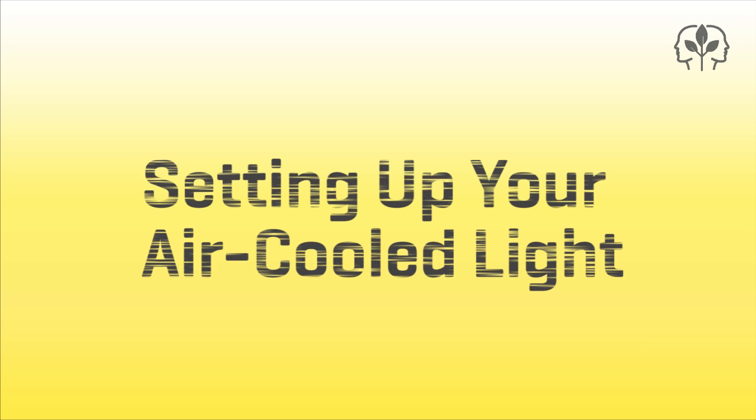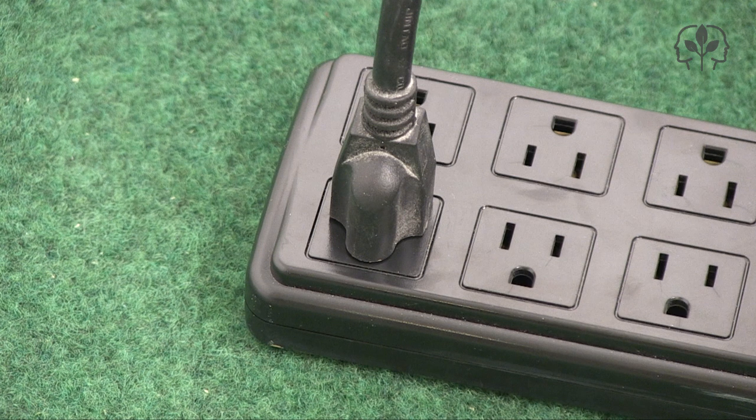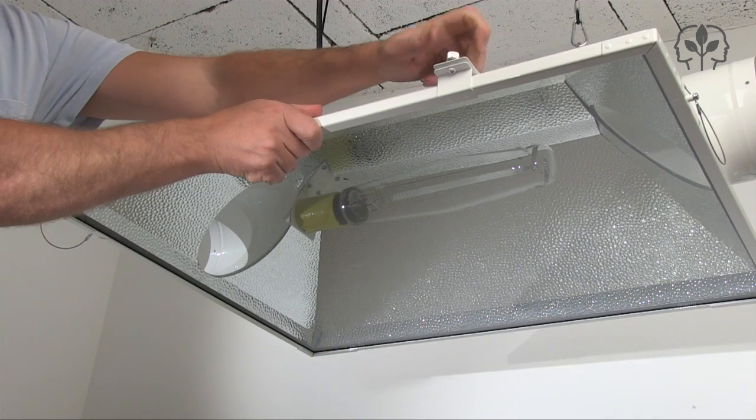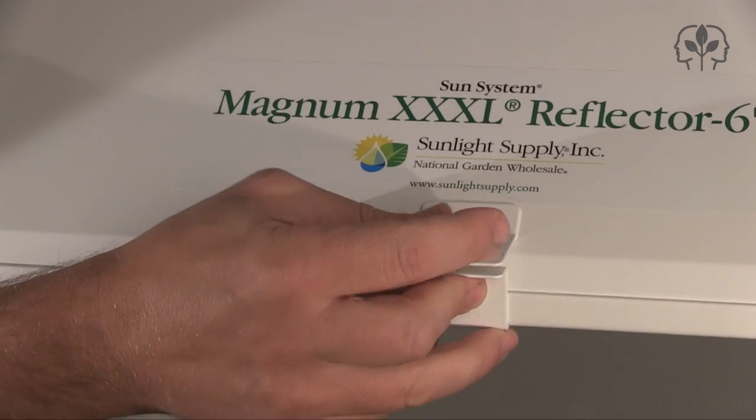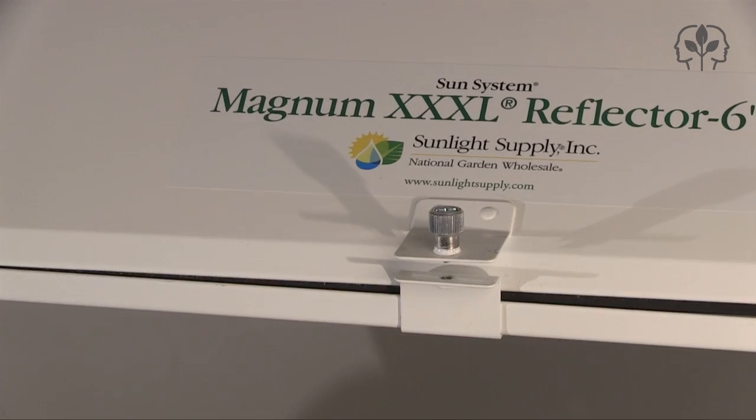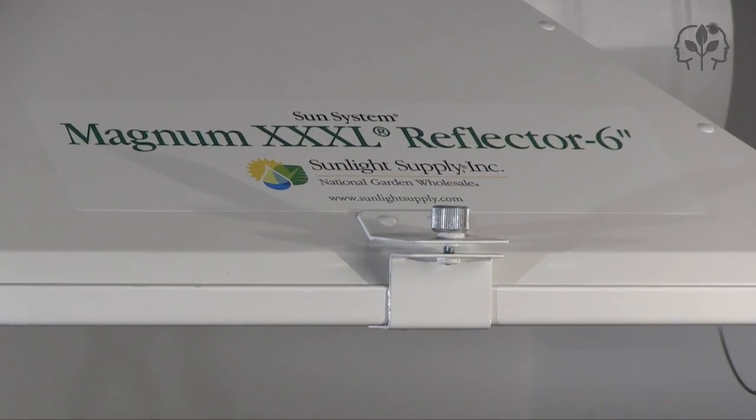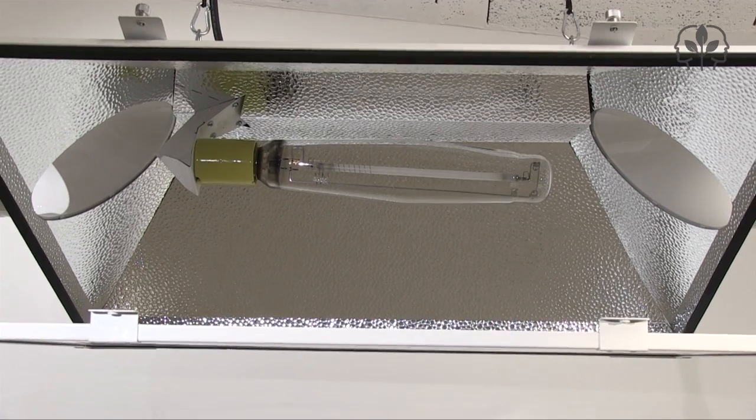You should replace your lamps every six to nine months. Disconnect the power supply and unscrew the glass cover. This reflector has quick-release screws that make your life much easier. If the lamp has recently been in operation, wait at least half an hour to allow it to cool.